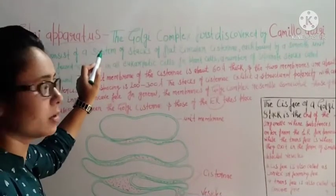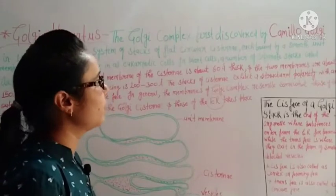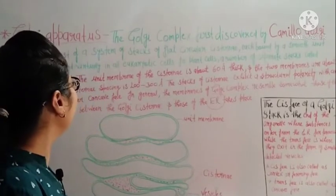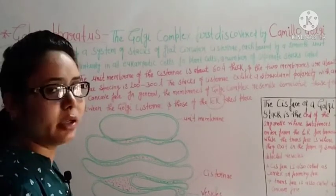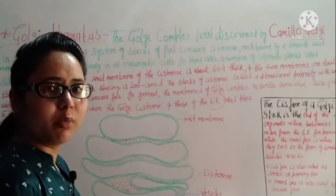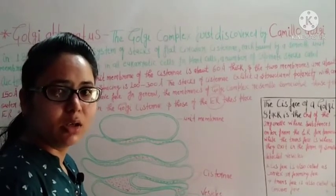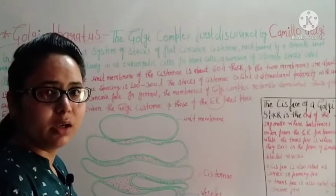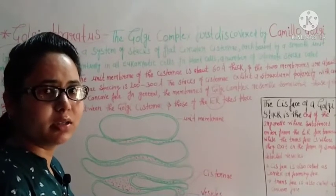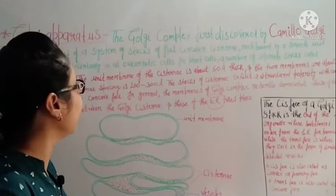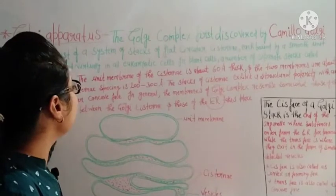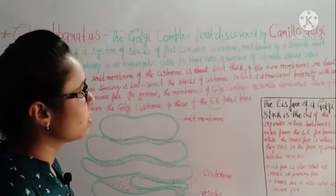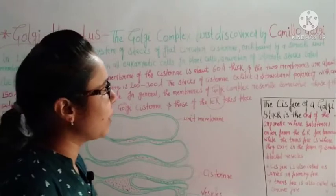The Golgi apparatus, also called the Golgi complex, was first discovered by Camelo Golgi in 1898. The Golgi apparatus was named after him. It consists of a system of stacks of flat circular cisternae.